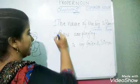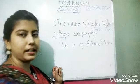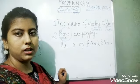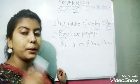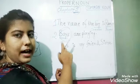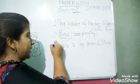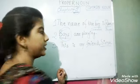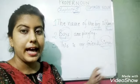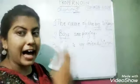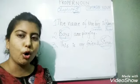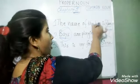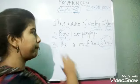Like in the next line I have written: 'Boys are playing.' Here, 'boys' is a common noun, but I have used a capital letter because the common noun is at the very beginning of the sentence. Now look at the third sentence: 'This is my friend Sima.' Sima is a proper noun and it is used at the last part of the sentence, but I have used a capital letter. So you have to use a capital letter to write a proper noun, and generally small letters to write common nouns — but not at the beginning of the sentence.